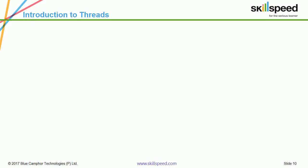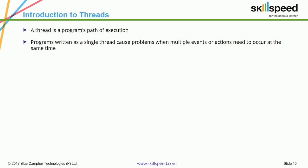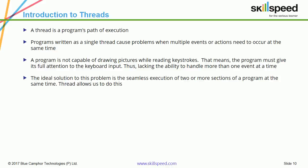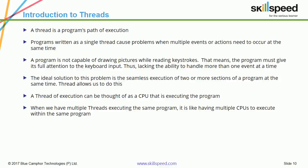Let us now go through the concept of threads in detail. A thread is a program's path of execution. Programs written as single-threaded cause problems when multiple events or actions need to occur at the same time — a program is not capable of drawing pictures while reading keystrokes. The ideal solution is the seamless execution of two or more sections of a program at the same time. A thread allows us to do this. A thread execution can be thought of as a CPU executing the program; having multiple threads is like having multiple CPUs executing within the same program.